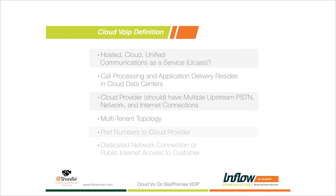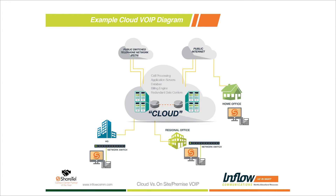When you move to a cloud provider, just like when you're moving carriers, you port your numbers to the cloud provider. They own your main numbers and your DIDs. You then set up call flow, which is all handled in the cloud, and it delivers those communications to your IP handsets, softphones, or whatever communication device you're using on site.